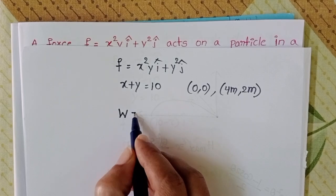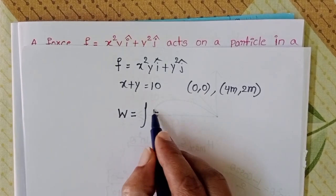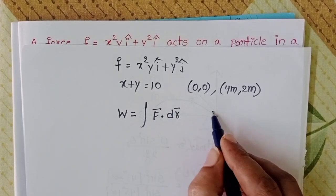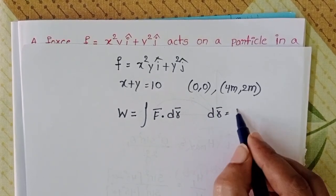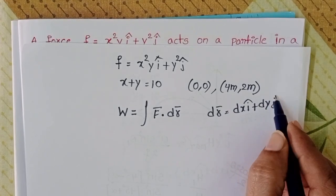When force is variable, the formula for work is integral F⃗·dr⃗. Here dr⃗ equals dx î plus dy ĵ.